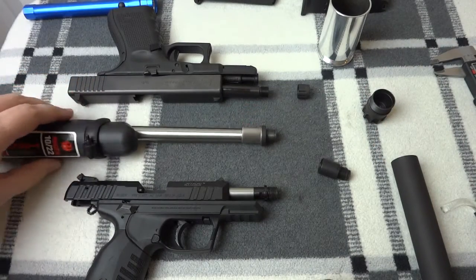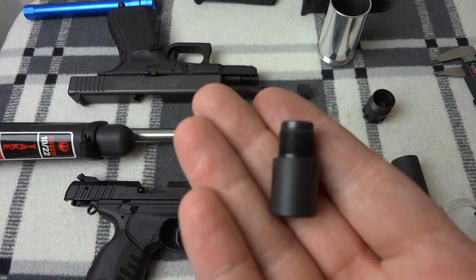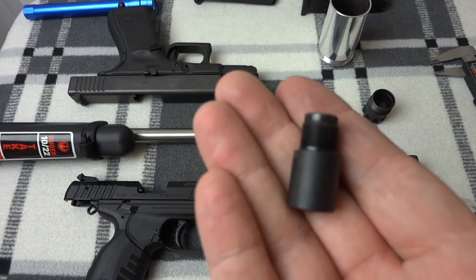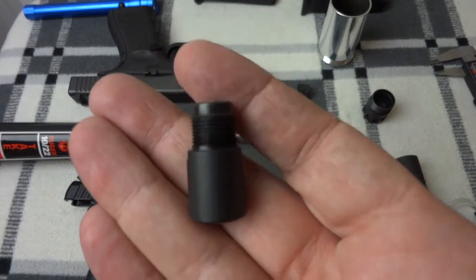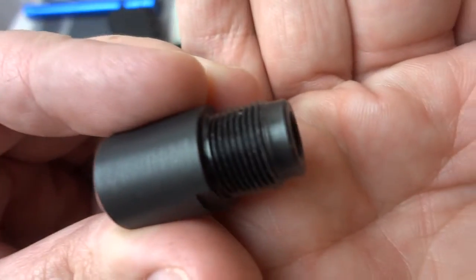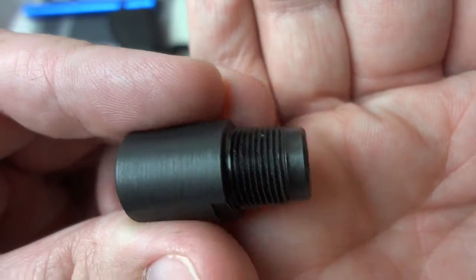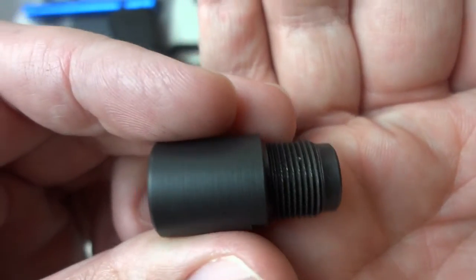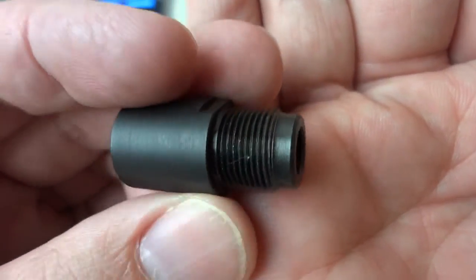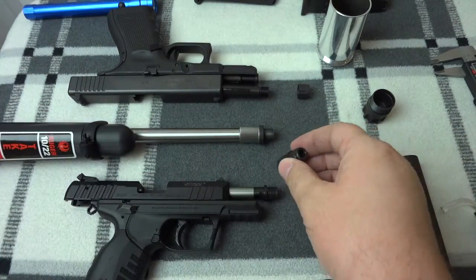So not all threads are created equal. Optimally, you want SilencerCo spec threads, and that o-ring engagement does keep the suppressor from backing off, and that's a really huge feature, because you don't want the suppressor backing off. What happens when the suppressor backs off is you get baffle strikes, your can can go down the range, all kinds of bad things can happen, and the can is a huge investment, so we don't want that to happen.